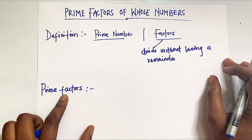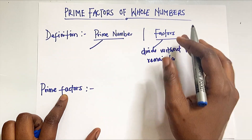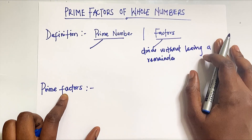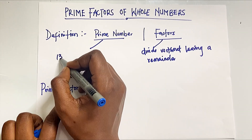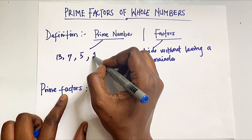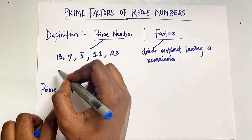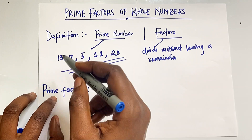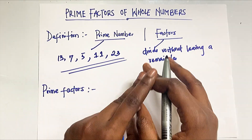That's what a factor is. Now, what is a prime number? A prime number is a number that can only be divisible by one and itself. Numbers like 13, 7, 5, 11, and 23 — these kinds of numbers can only be divisible by one and themselves. They don't have any other factors.